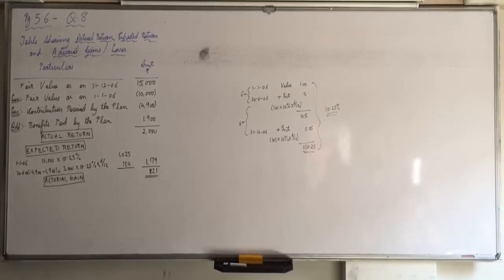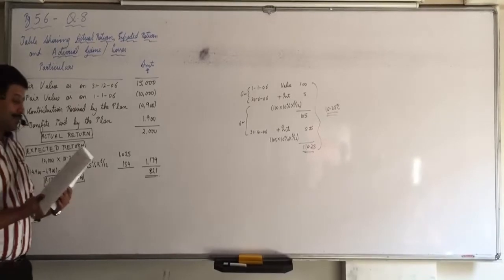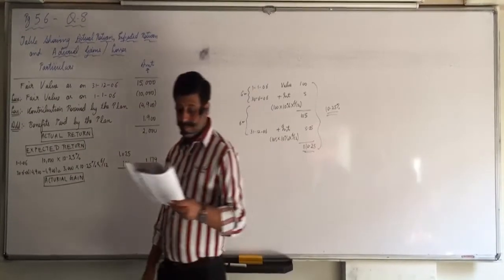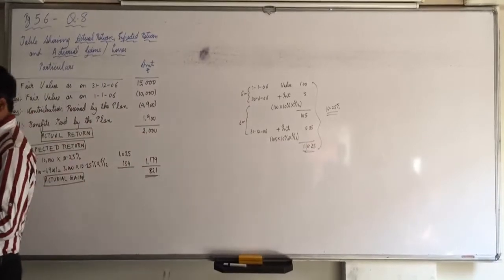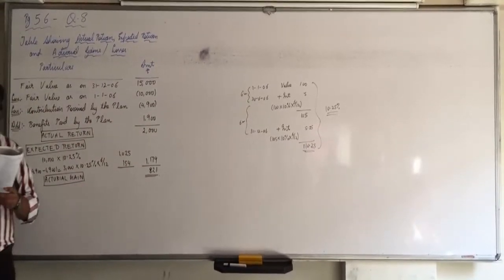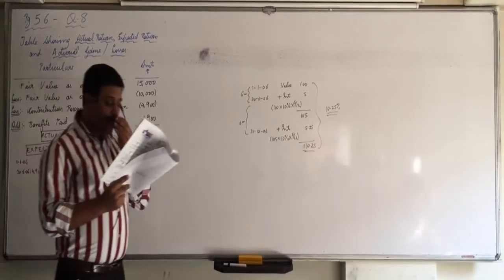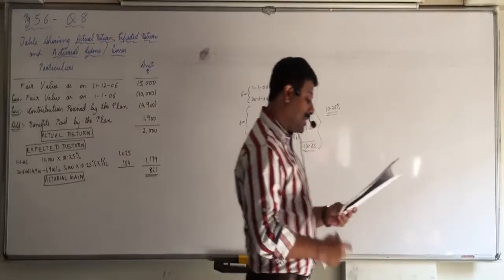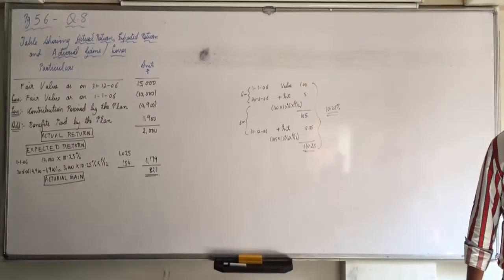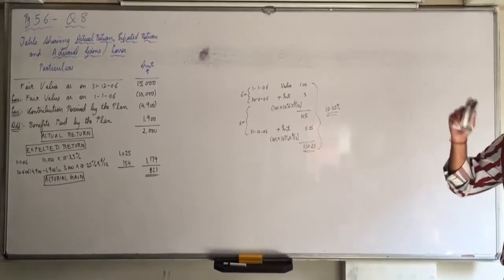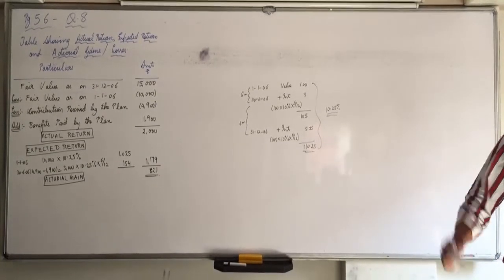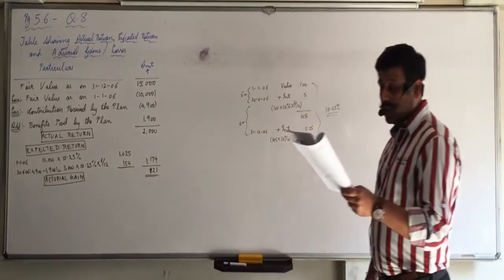Now look at question number 12. Question number 12. The fair value of plan assets at the beginning and end of the year were 2800 and 3086 respectively. So you will start with fair value at the end that is 3086 minus fair value at the beginning that is 2800.